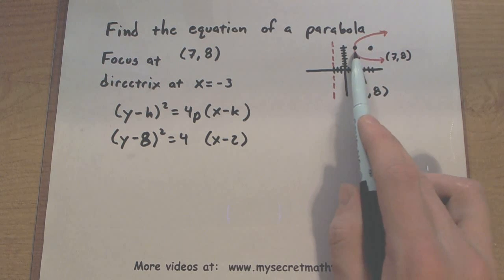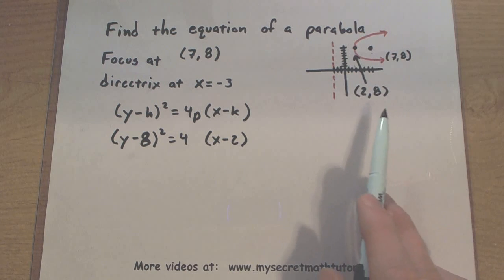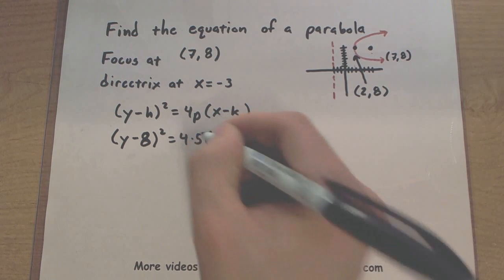Now the distance between this vertex and the focal point looks like it's exactly 5 away, so we'll put in a 5.